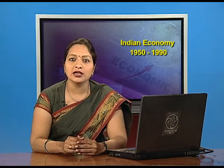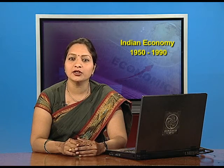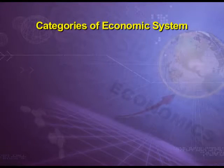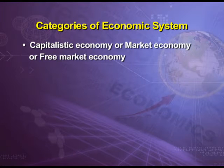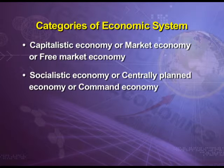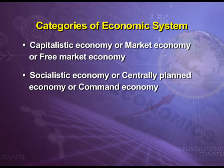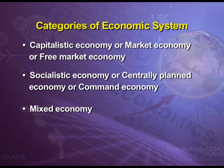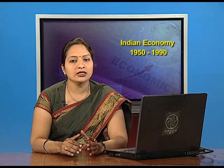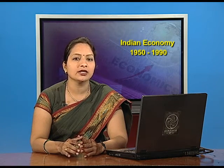This economic system is divided into three categories. First is the capitalistic economy, commonly known as market economy, sometimes also known as free market economy. The second economic system is socialistic economy, or centrally planned economy, or command economy. And the third economic system is mixed economy. Let us start our chapter with the understanding of all these three types of economies.